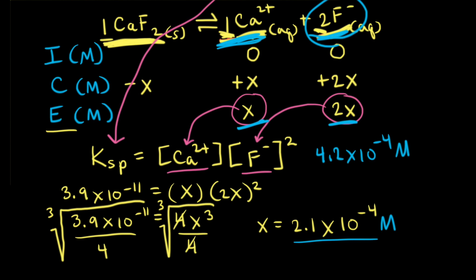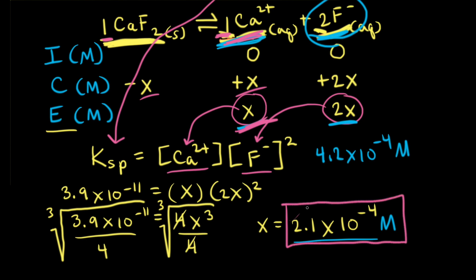Our goal was to calculate the molar solubility of calcium fluoride. Molar solubility refers to the concentration of our salt that dissolved to form a saturated solution at equilibrium. Since X refers to the concentration of calcium 2+ ions at equilibrium and that matches the mole ratio, X is also the concentration of calcium fluoride that dissolved. Therefore, 2.1 times 10 to the negative 4th molar is the molar solubility of calcium fluoride.